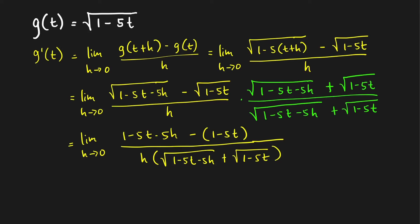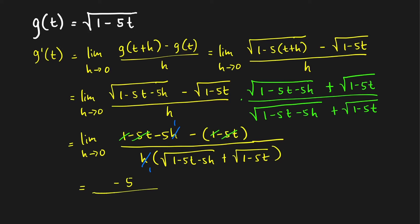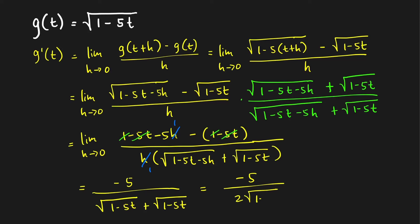We cancel the 1 minus 1 and the negative 5t minus negative 5t, leaving negative 5h in the numerator. We have a common factor of h in the numerator and denominator, so we cancel it. This gives us the limit as h approaches 0 of negative 5 over the sum of the square roots. As h goes to 0, the limit is negative 5 over square root of 1 minus 5t plus square root of 1 minus 5t, which equals negative 5 over 2 times the square root of 1 minus 5t.